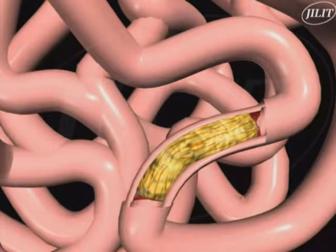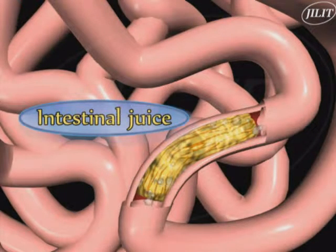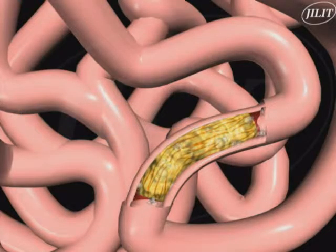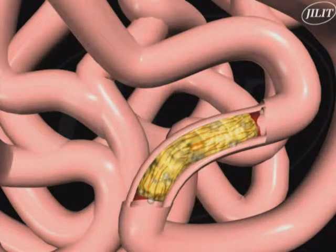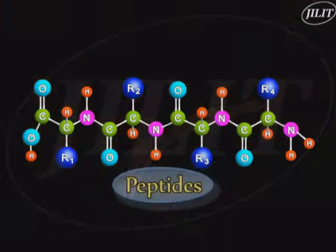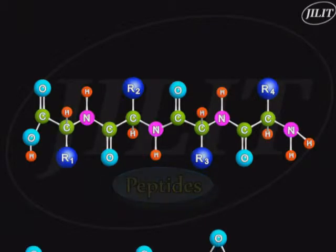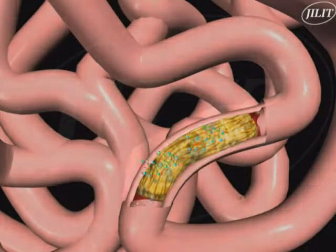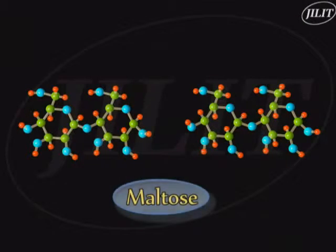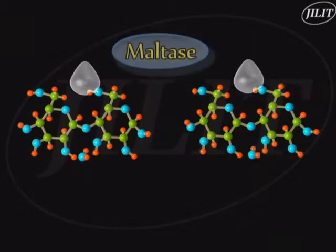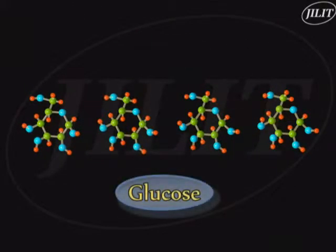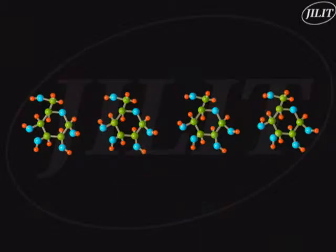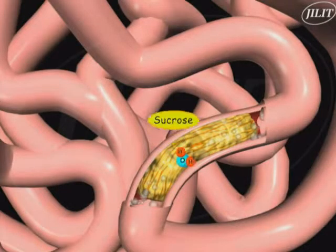Glands in the walls of the ileum secrete intestinal juice, which contains digestive enzymes needed to complete the digestion of peptides and disaccharides. Like the enzymes in the pancreatic juice, the intestinal enzymes also require an alkaline medium to act optimally. Peptides are digested by erepsin to amino acids, and maltose is digested by maltase to glucose. The digestion of other disaccharides, each catalyzed by its own enzyme, also takes place in this region.